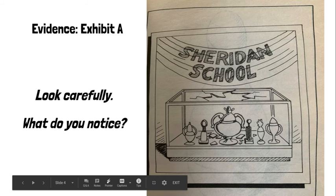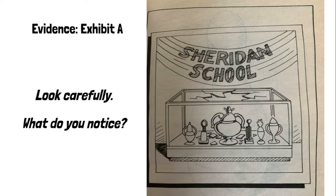Exhibit A is a photograph of the broken display case. The sterling silver trophy inside was untouched — the principal had interrupted the intruder before he was able to remove it. The principal continued his testimony: I chased the intruder and he ran into the boy's locker room. I was right behind him. From the locker room, he ran into the gym office and then out the rear door. He was running too fast for me to catch him.